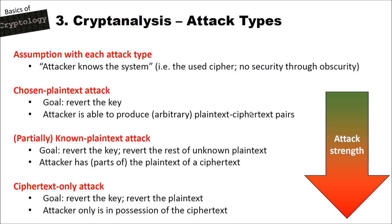Then we have the partially known plaintext attack in the middle. With this attack, the goal is to revert the key or to revert the rest of the unknown plaintext. This could also be a known plaintext attack, where the attacker knows the complete plaintext, but in contrast to the first attack, the attacker cannot generate new plaintext-ciphertext pairs. The attacker has parts of or the complete plaintext of a given ciphertext.